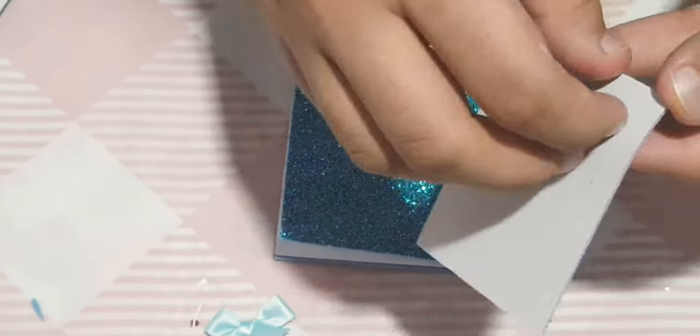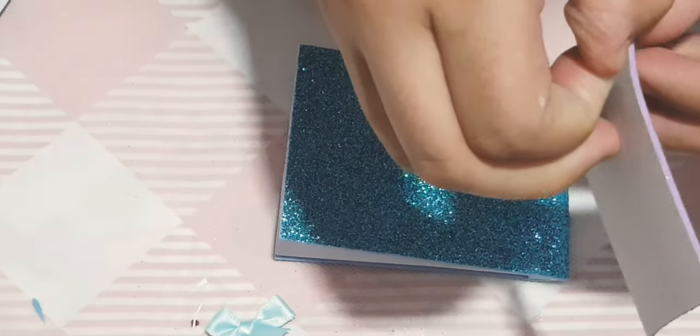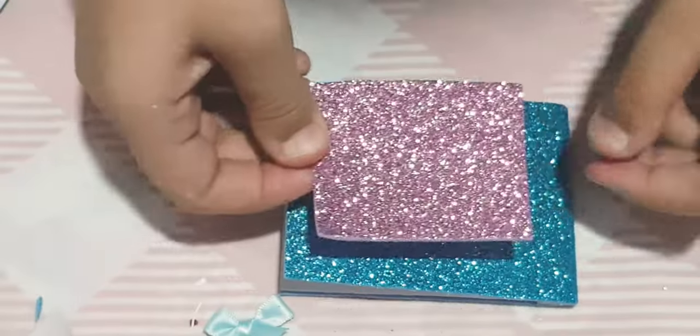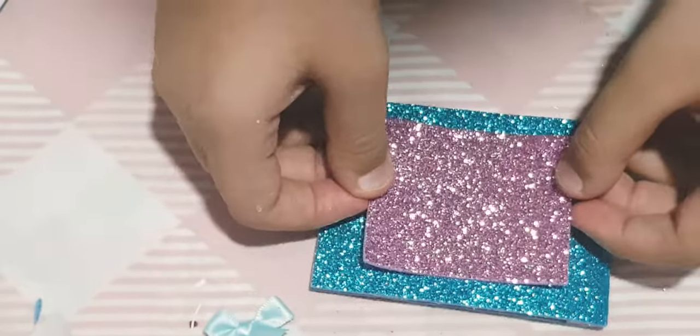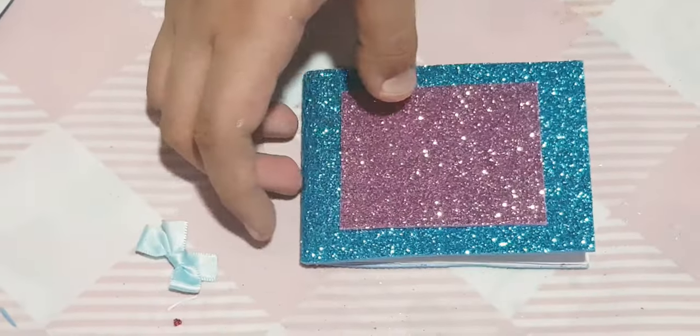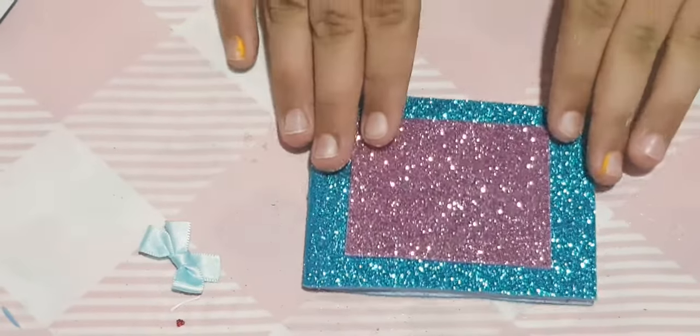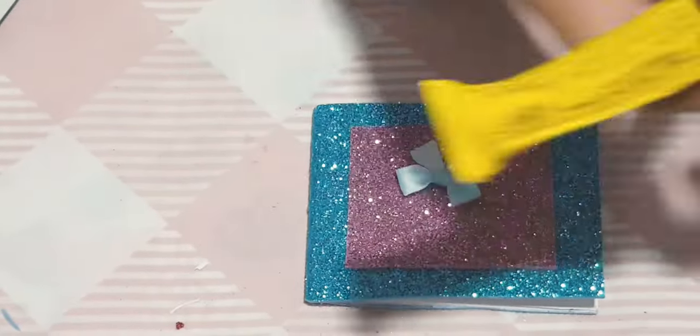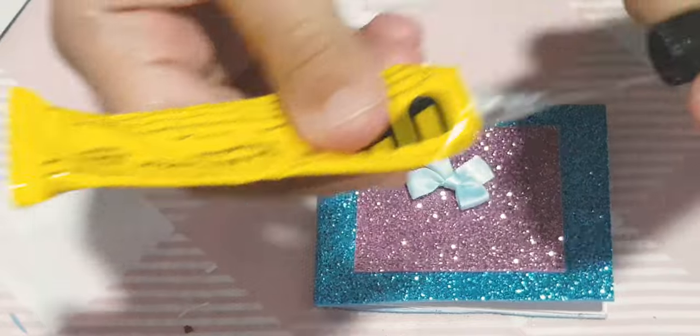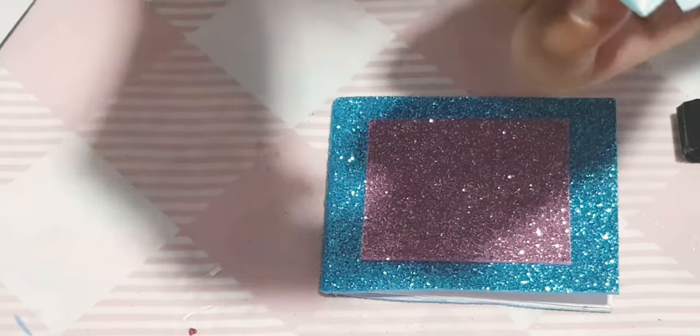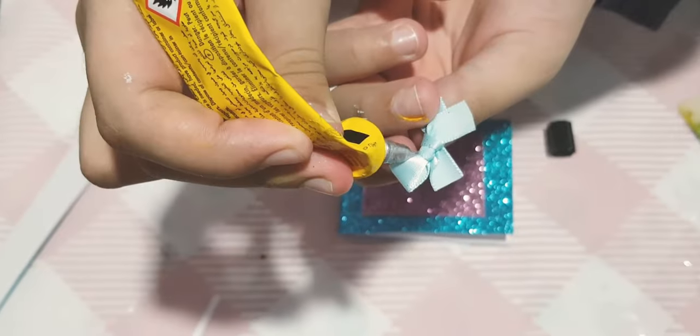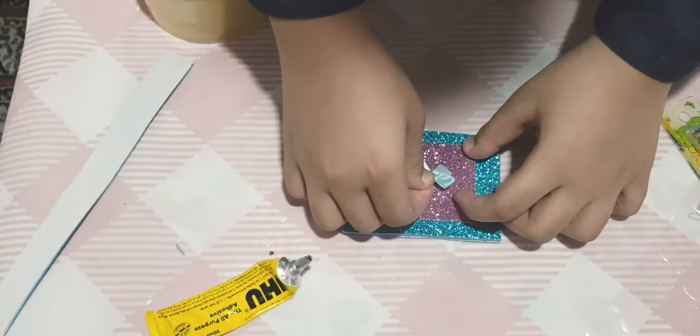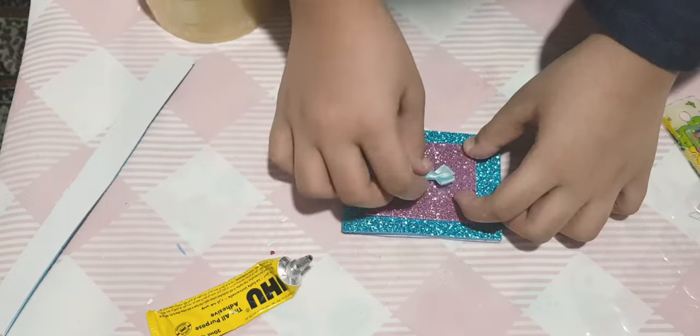Now I took a pink glitter sheet and I'm just gonna take out the wrap of it and paste it in between, like this. After we do this, take a cute little bow as I took, and take the tube glue and just paste it on the back part, and paste it in the middle.